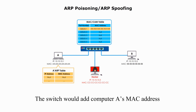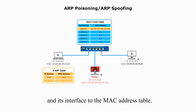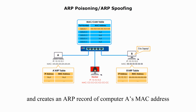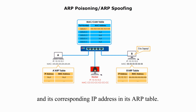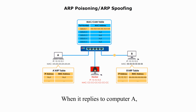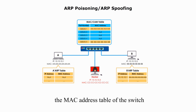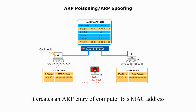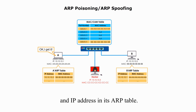The switch would add computer A's MAC address and its interface to the MAC address table. As computer B hears the broadcast, it creates an ARP record of computer A's MAC address and its corresponding IP address in its ARP table. When it replies to computer A, the MAC address table of the switch also adds an entry for computer B. When computer A gets the message, it creates an ARP entry of computer B's MAC address and IP address in its ARP table.